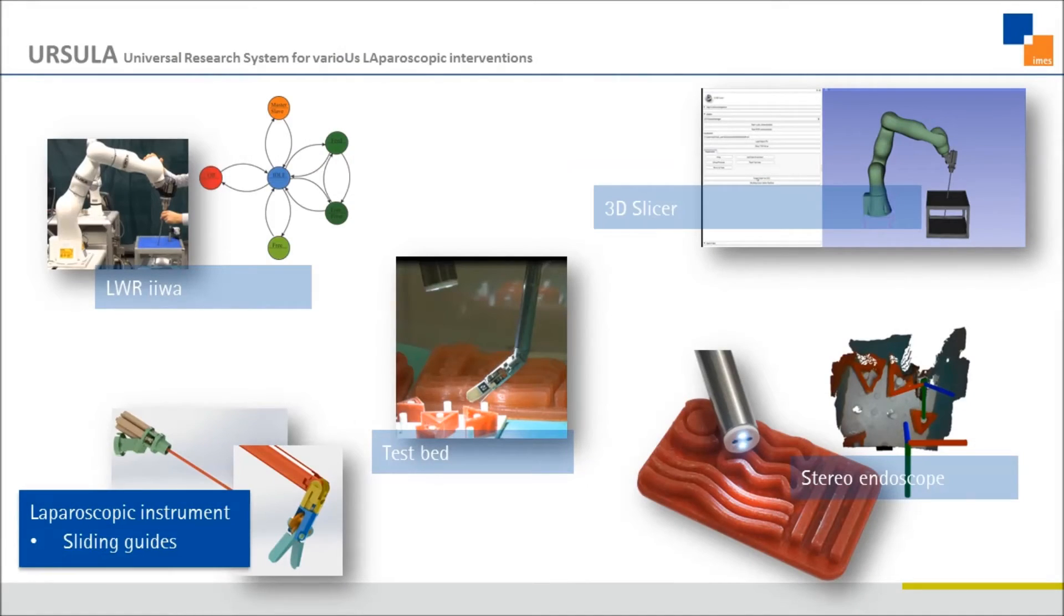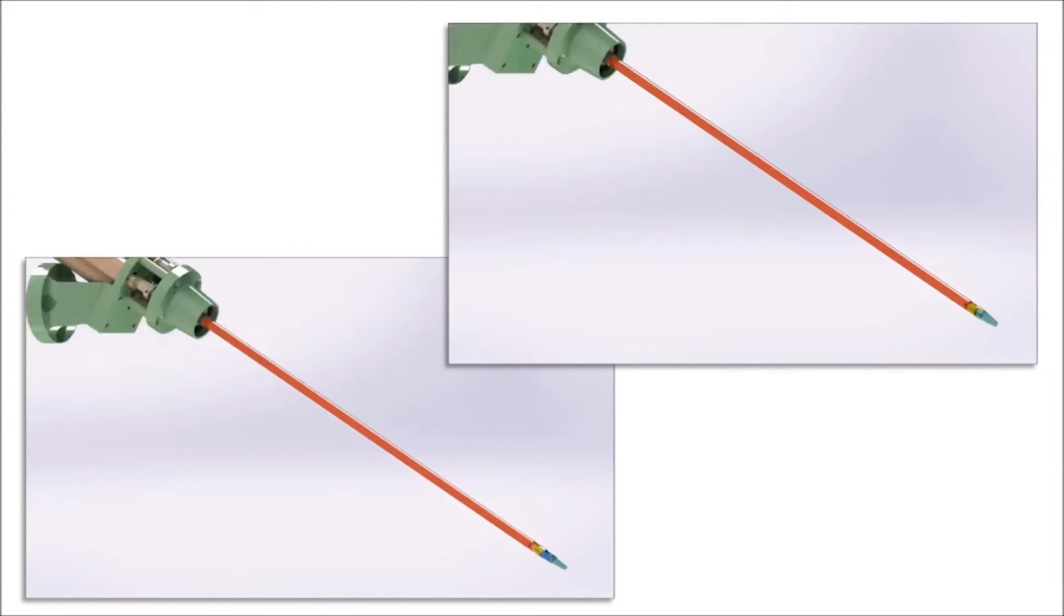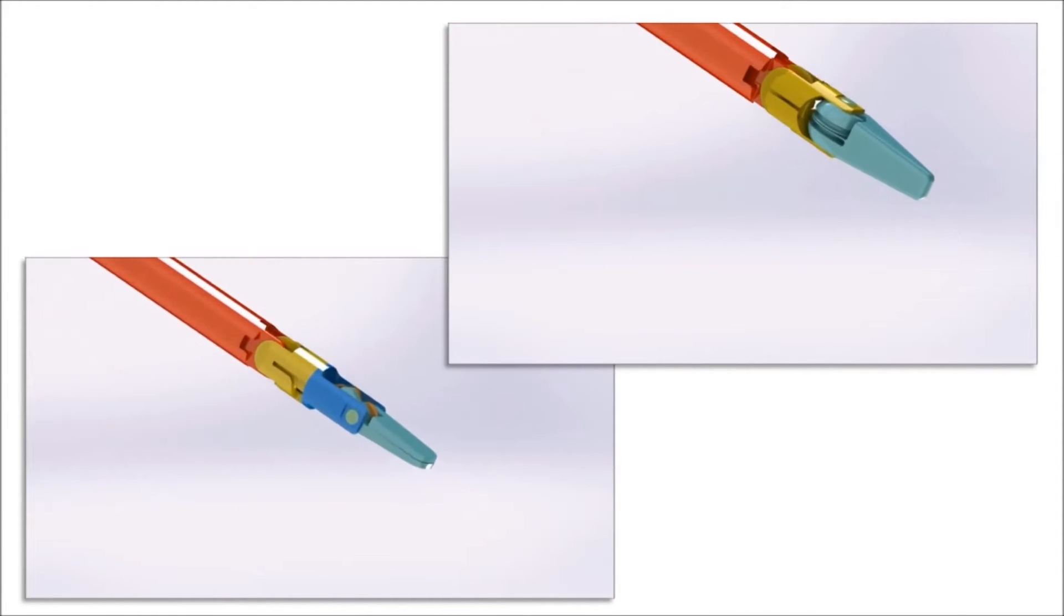Our two custom-made instruments include sliding guides for the actuation ropes. Each instrument consists of three major components: actuation unit, shaft, and distal assembly.